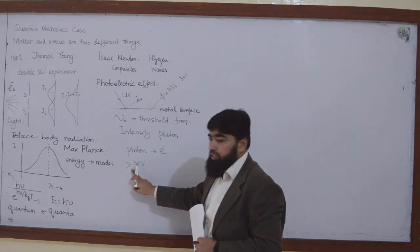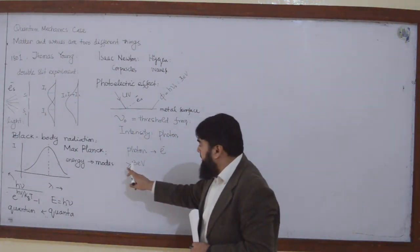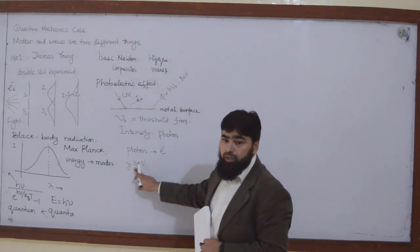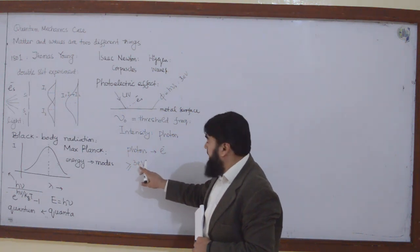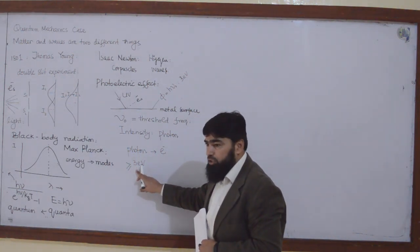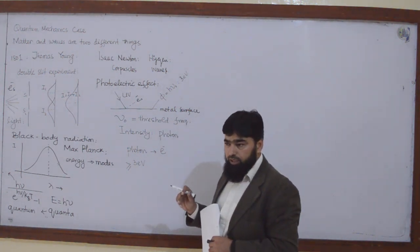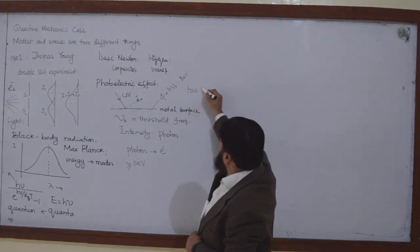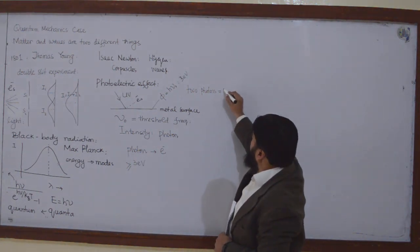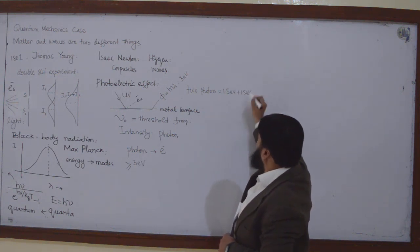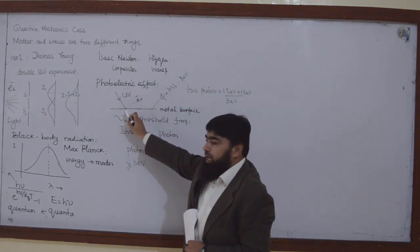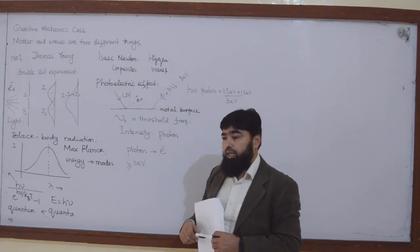When the energy of a single photon becomes 3 electron volts or greater — principally it should be slightly greater to conserve the law of conservation of momentum — then it will eject the electron. But what about two photons? If two photons are there and each has 1.5 electron volts of energy, the sum is 3 electron volts. Will those two photons be able to eject the electron? The answer was no.